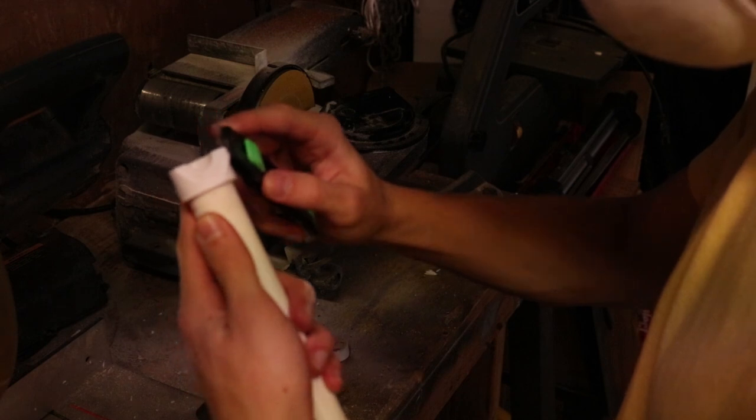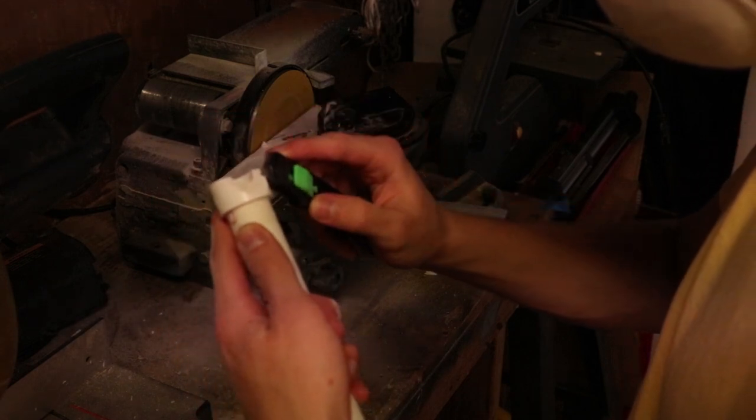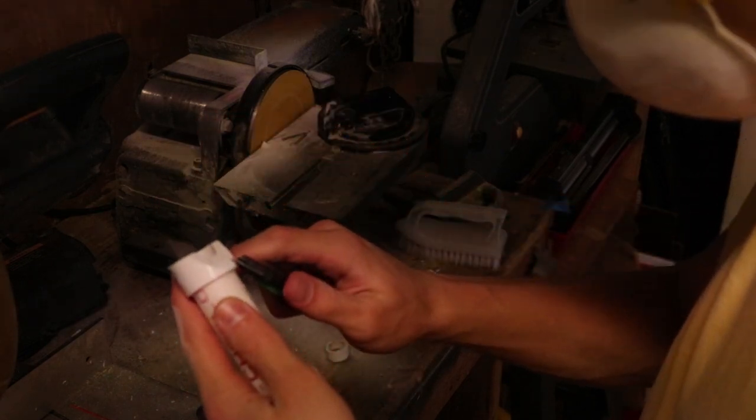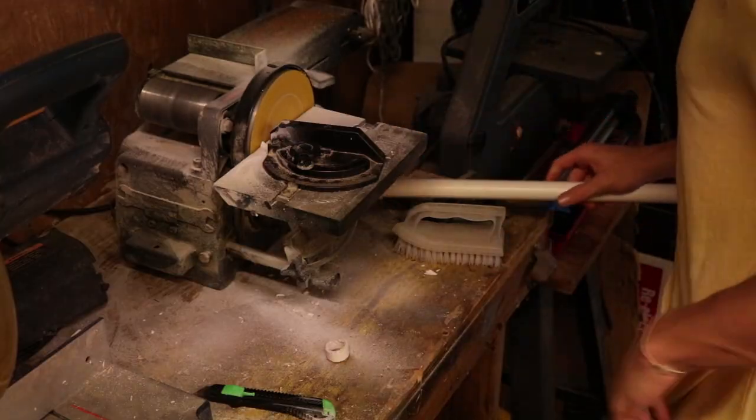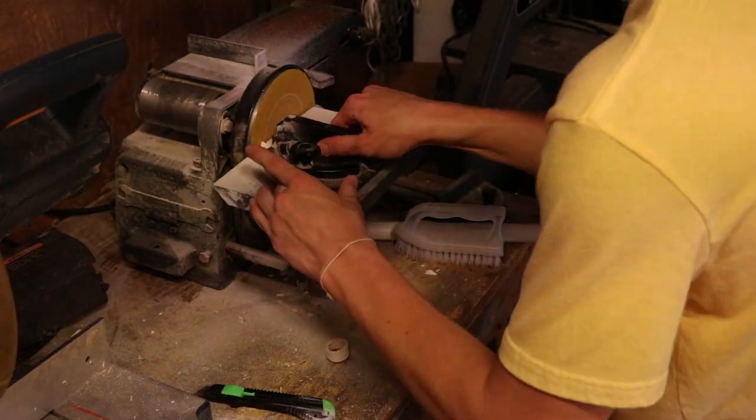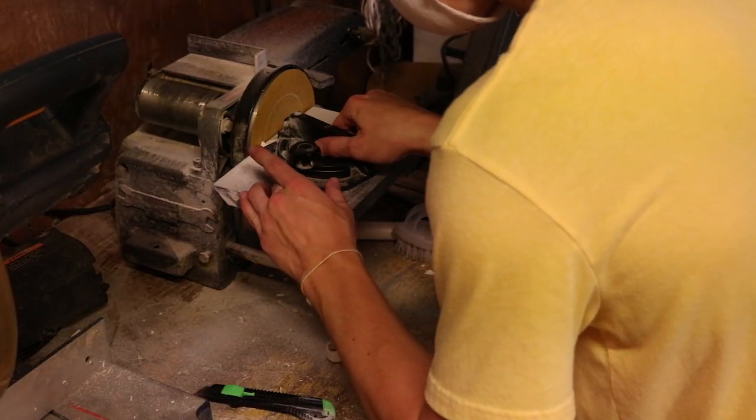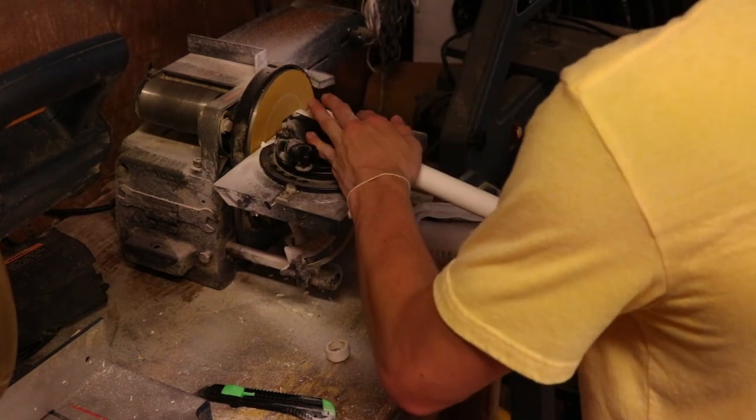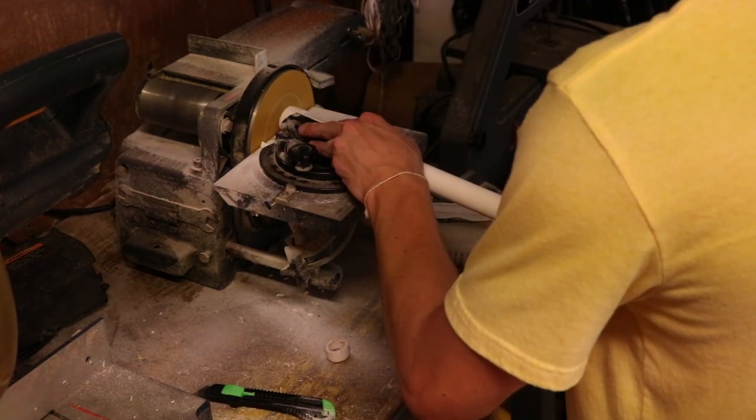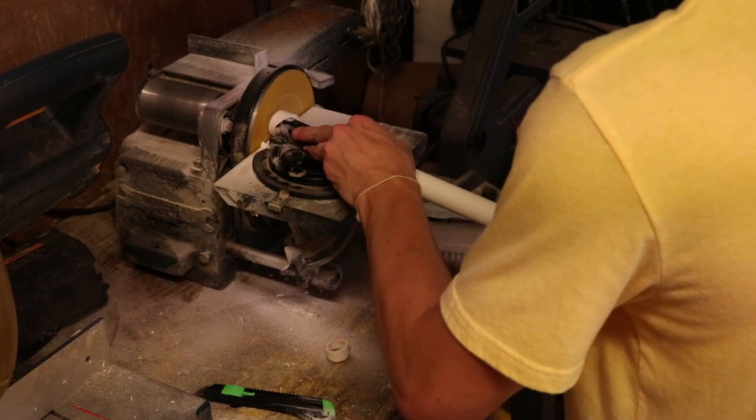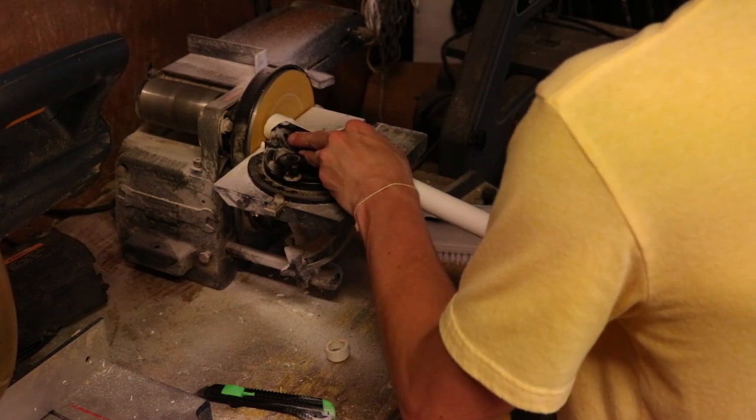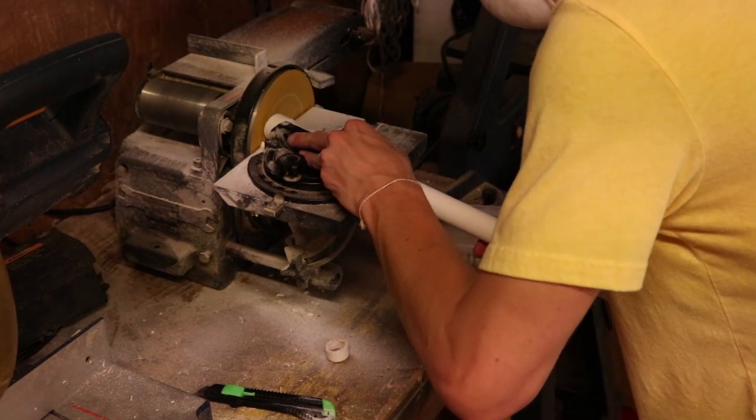Trim off the excess little bits. And now we need to set our angle to 75 degrees the opposite direction. And now we sand the opposite side of the mouthpiece from the side that we just sanded. This only needs to be sanded until we've connected the peak of the other angle we just created.